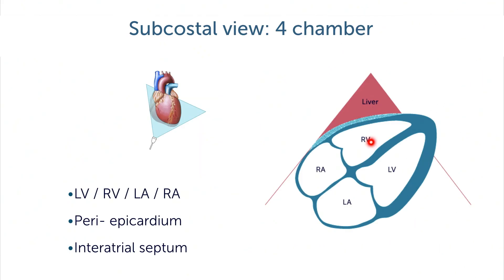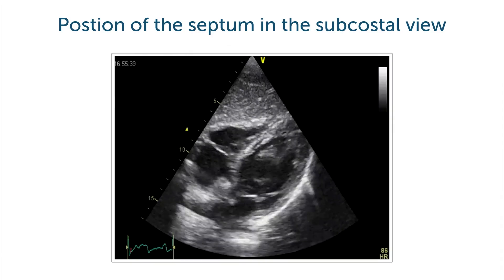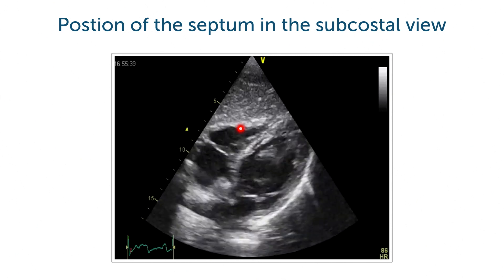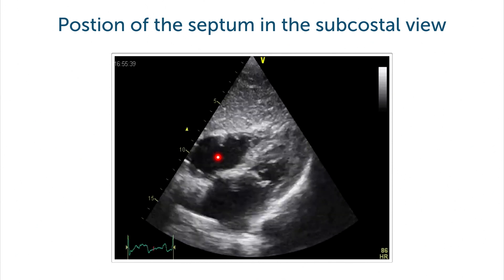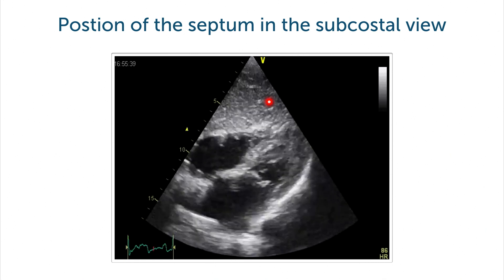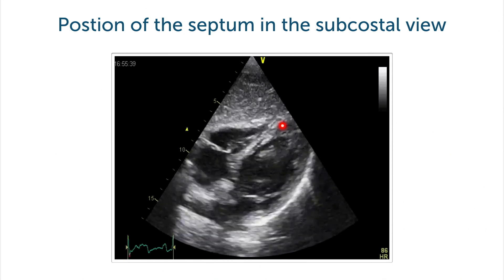As a short review, we are seeing all four chambers. The right ventricle is the one closer to the transducer. We can see the pericardium and epicardium very nicely here below the liver, and we have a very perpendicular orientation to the interatrial septum. This is a subcostal view in a healthy individual: right ventricle, left ventricle, right atrium, left atrium. Note that there is no gap between the liver and the heart.